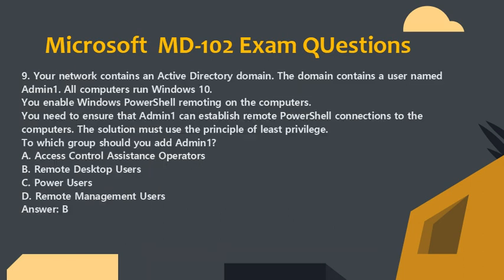Question 9. Your network contains an Active Directory domain. The domain contains a user named Admin1. All computers run Windows 10. You enable Windows PowerShell remoting on the computers. You need to ensure that Admin1 can establish remote PowerShell connections to the computers. The solution must use the principle of least privilege. To which group should you add Admin1?